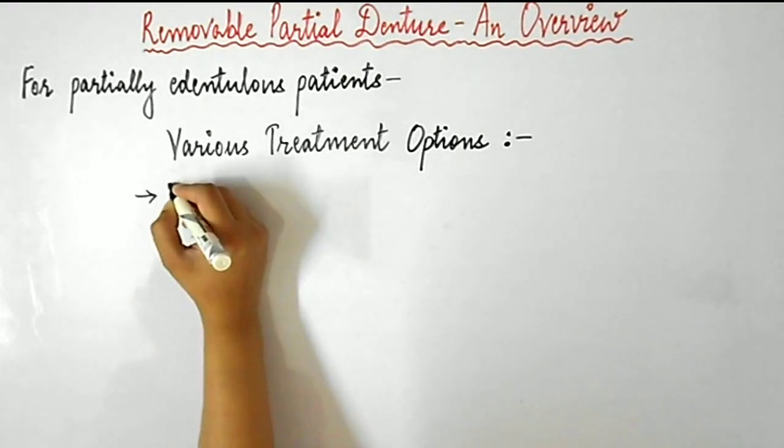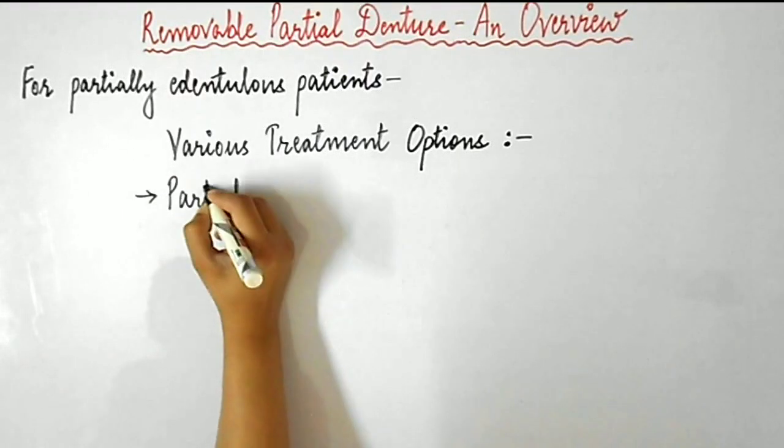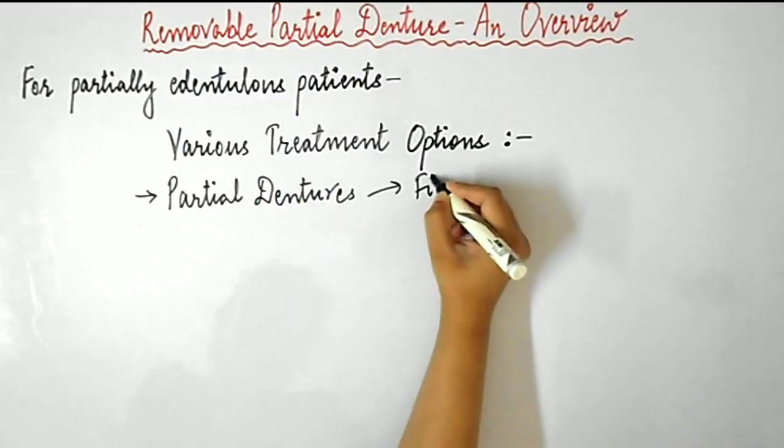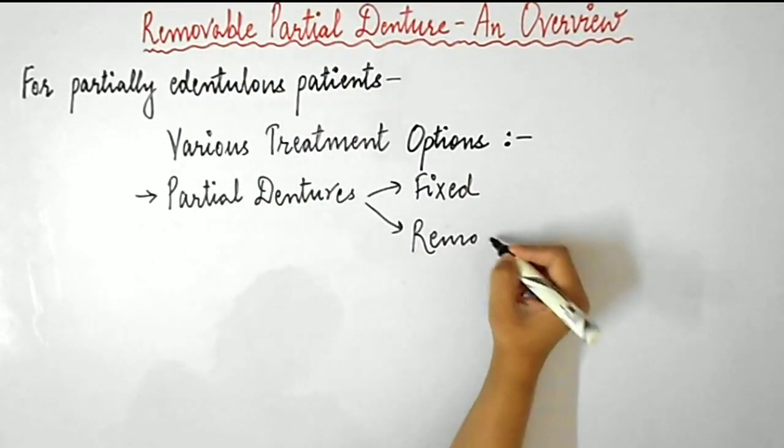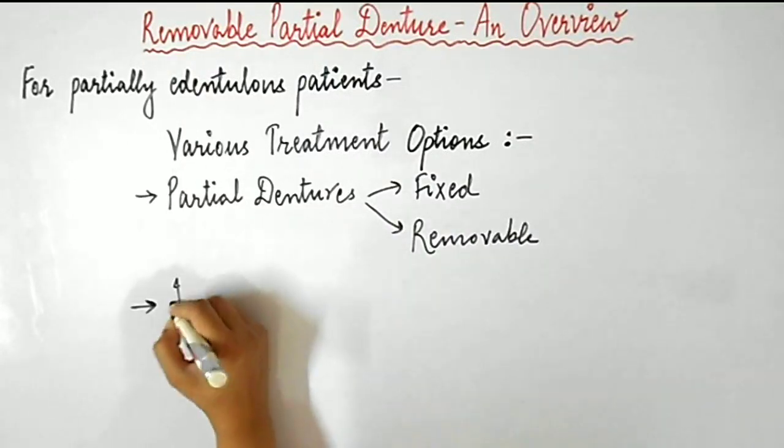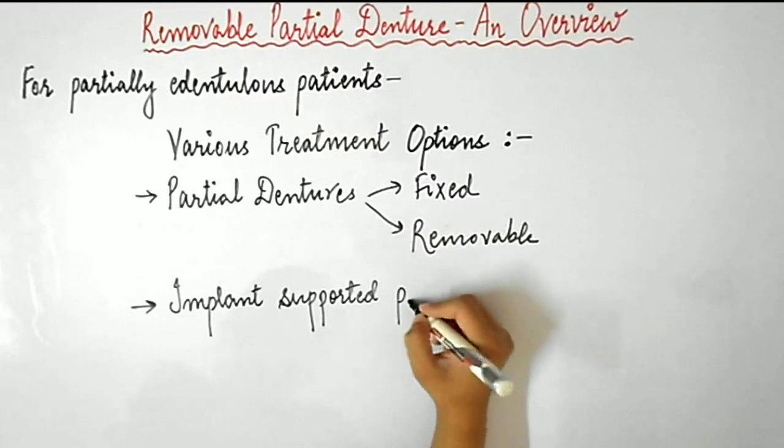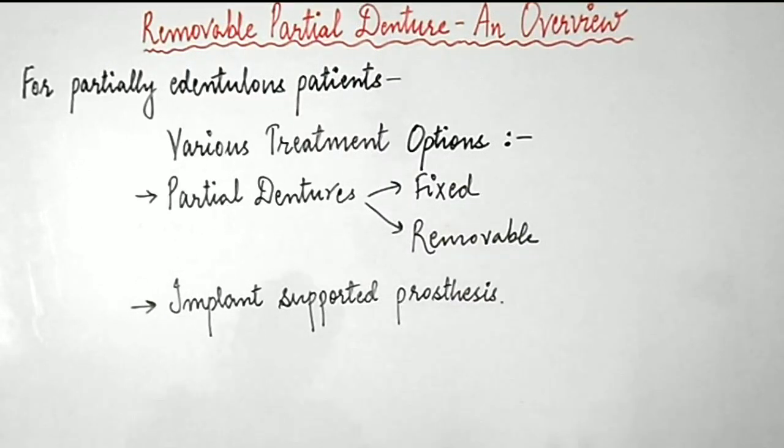For partially edentulous patients, various treatment options are available for the replacement of teeth, which include partial dentures. Partial dentures can either be removable or fixed, and implant-supported prosthesis is another treatment option for such patients.